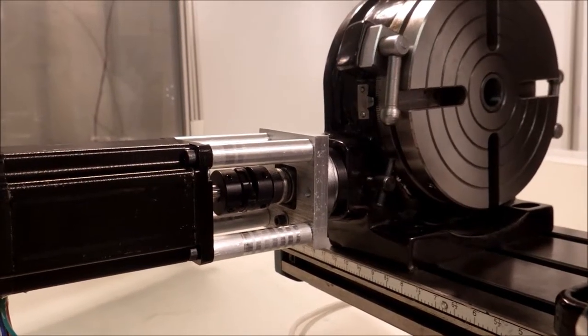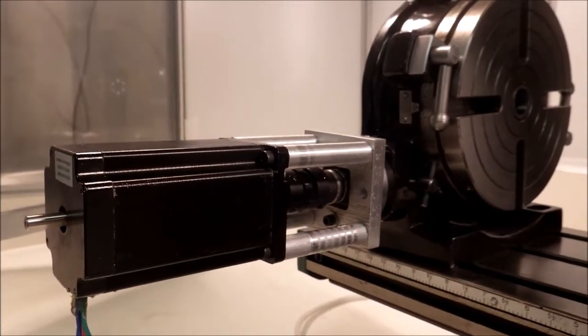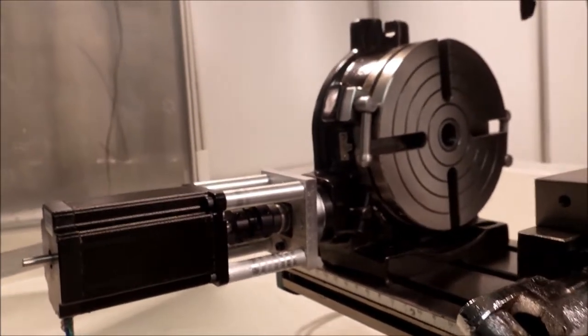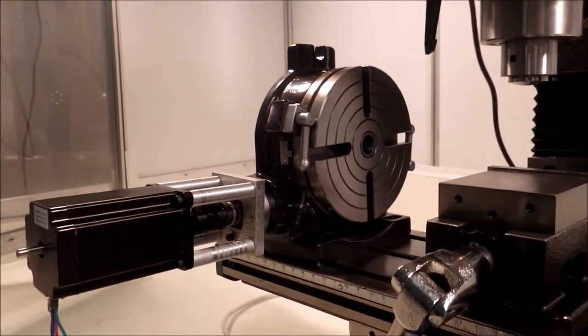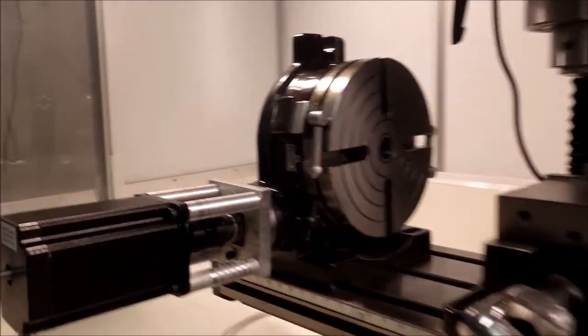This is my rotary table A axis for the Grizzly G0704 CNC conversion. I've wanted to do this since I first put the conversion together and had the parts and finally got around to figuring out how to do it and doing it all.